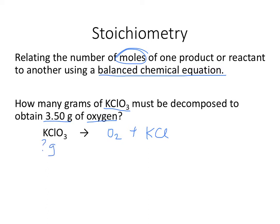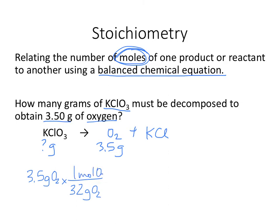How many grams of KClO3 must be decomposed to obtain 3.5 grams of oxygen? I'm going to take that 3.5 grams of oxygen and convert it into moles. 32 grams of oxygen is the mass of one mole of oxygen — I use 32 because oxygen is O2, not single O. Now I have moles of oxygen, and I'm going to compare those to the moles of KClO3 in the balanced equation. KClO3 has 3 oxygens and O2 has 2 oxygens, so balancing gives us a 2 and a 3, meaning 2 KCl's. That ratio — 2 moles of KClO3 for every 3 moles of oxygen — is your conversion factor.